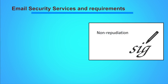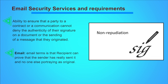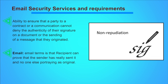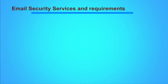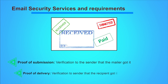Non-repudiation is the assurance that someone cannot deny something. Typically, non-repudiation refers to the ability to ensure that a party to a contract or a communication cannot deny the authenticity of their signature on a document or the sending of a message that they originated. In email terms, non-repudiation means the recipient can prove that the sender really sent it and no one else is portraying as the original sender. Proof of submission means verification to the sender that the mailer has received it. Proof of delivery means verification to the sender that the recipient received it.